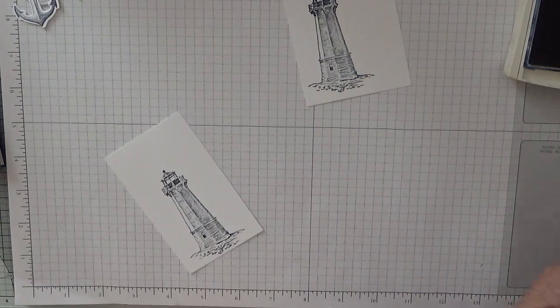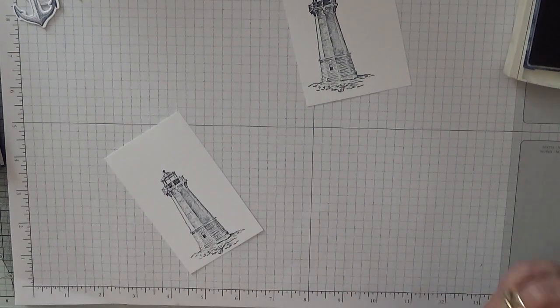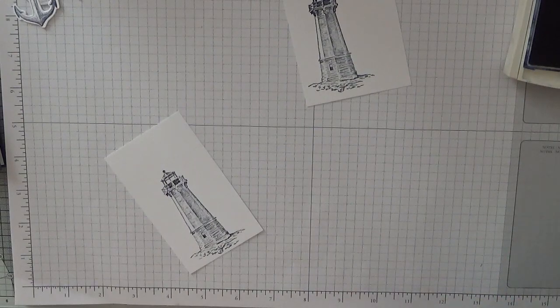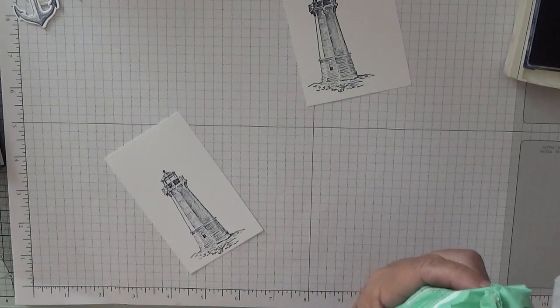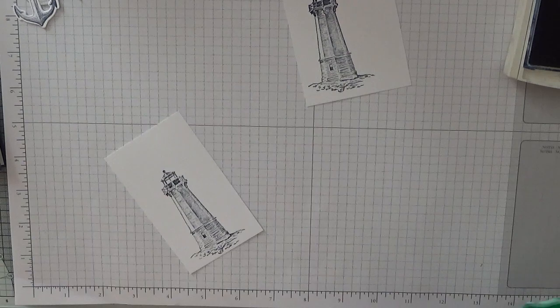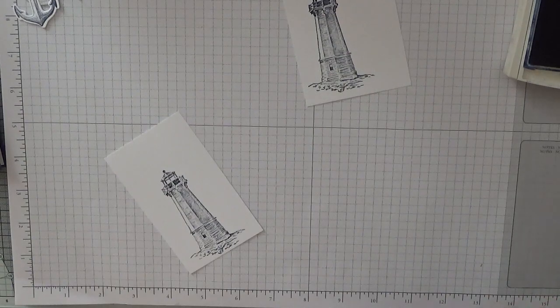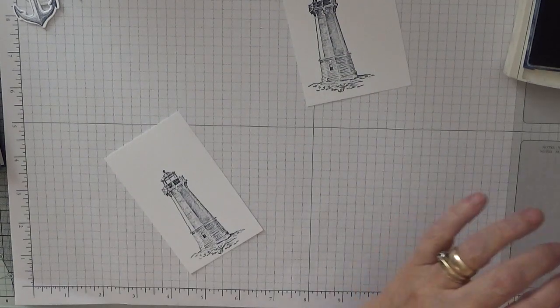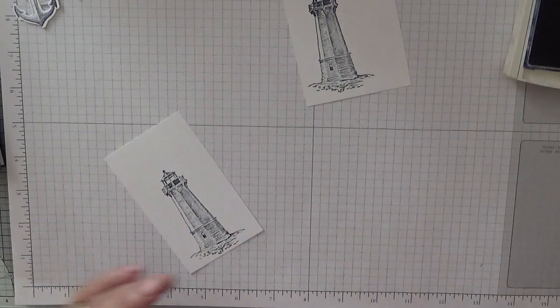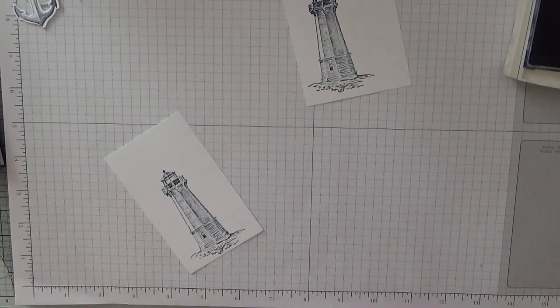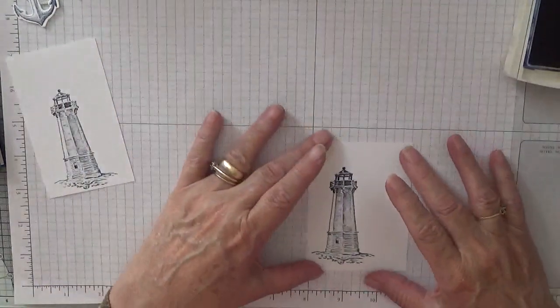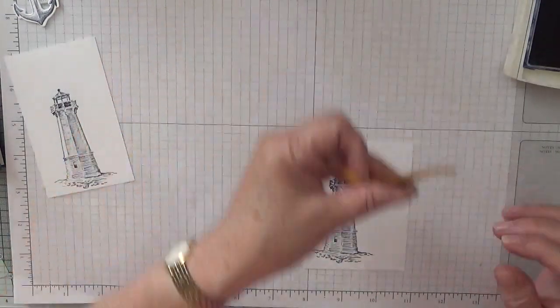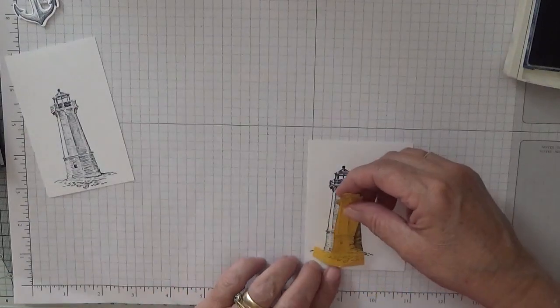Then we'll just get a wet wipe out, just take the excess blue off before I get my other cloth on. I don't want all that blue on my cloth. Right, this one, mask off the lighthouse like that.